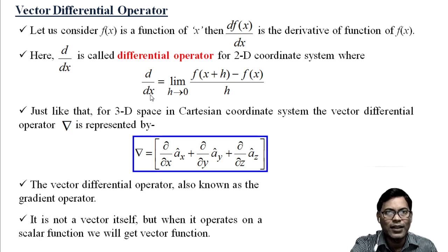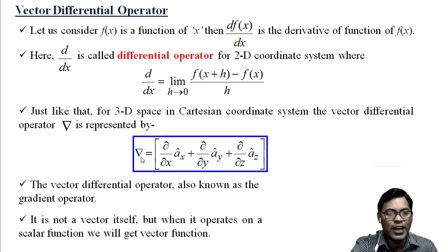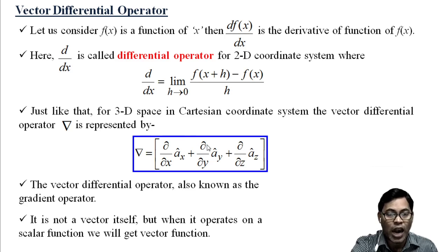Just like that, in the three-dimensional coordinate system, we use the differential operator represented by nabla, famously known as the gradient operator. In Cartesian coordinates, del equals (∂/∂x)ax + (∂/∂y)ay + (∂/∂z)az, representing the three-dimensional differential operator, also known as the gradient operator.